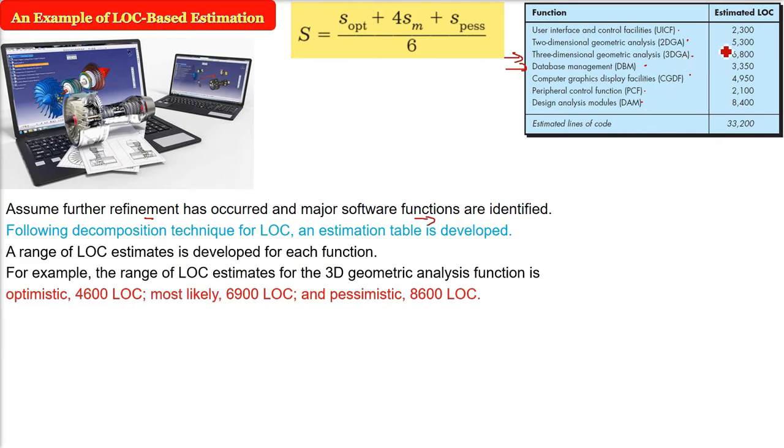For example, now come to our specific 3D three-dimensional geometric analysis, 3DGA. This is the function. Now there are three different ideas we have. Three people are there and they are saying: the optimistic is saying only 4,600 lines of code will work. The pessimistic is saying 8,600 LOC you have to write. The middle one, the most likely, will be 6,900 lines of codes. So for one function, we have to have three multiple inputs from various historical data, various inputs, various experience, everything.